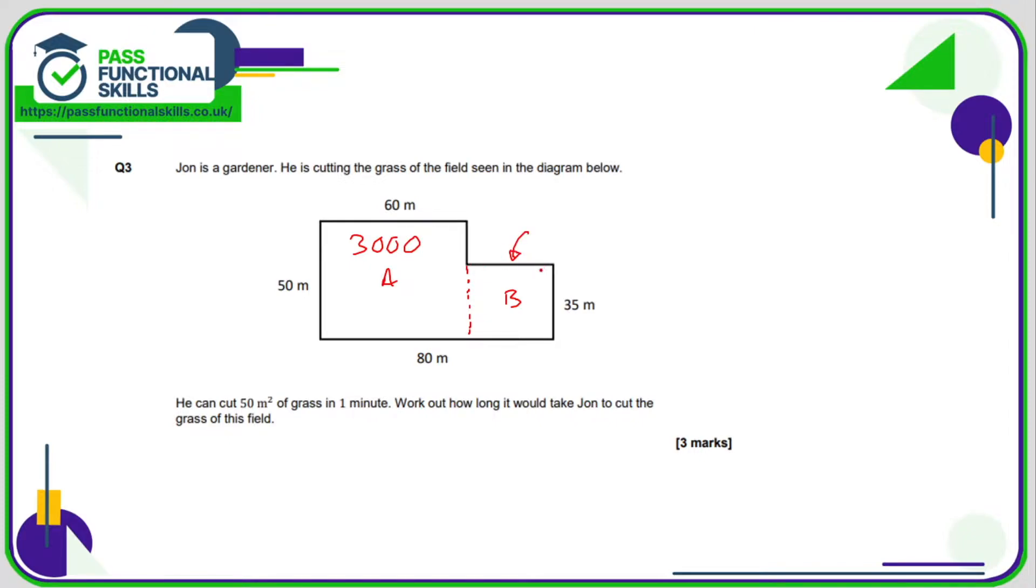Whatever this length is—well, if it's 60 from here to here and 80 from here to here, then this length here is going to be 80 minus 60, which is 20. So the area is 20 times 35, which is 700. So the area of the field is 3700 square meters, and we know John can do 50 square meters in a minute. So how many 50s go into 3700? 3700 divided by 50 is 74, so it's going to take him 74 minutes.